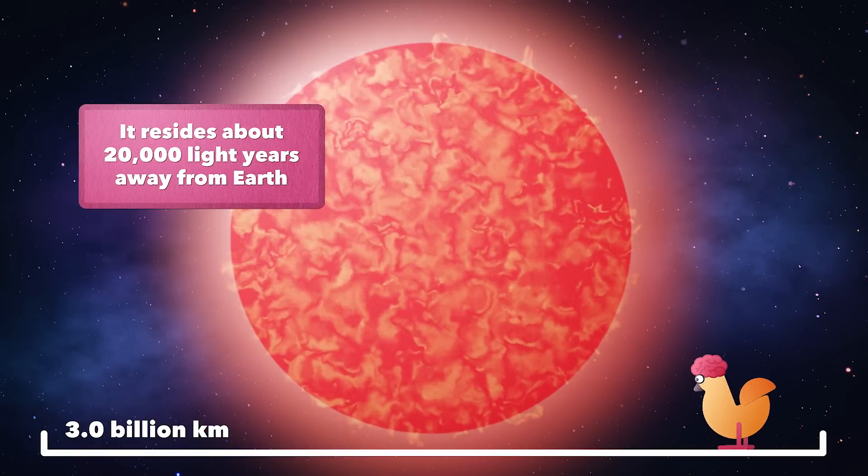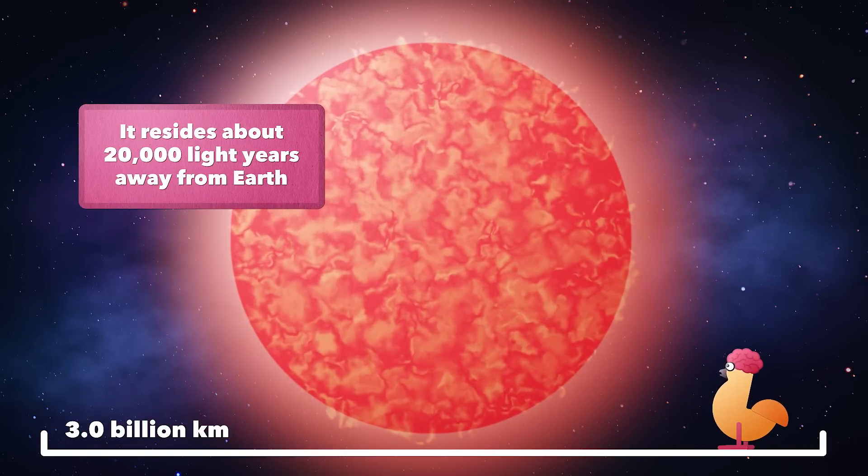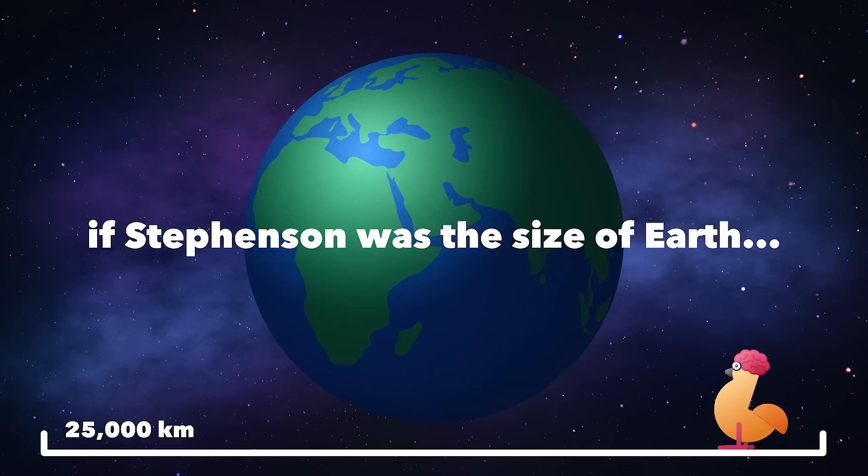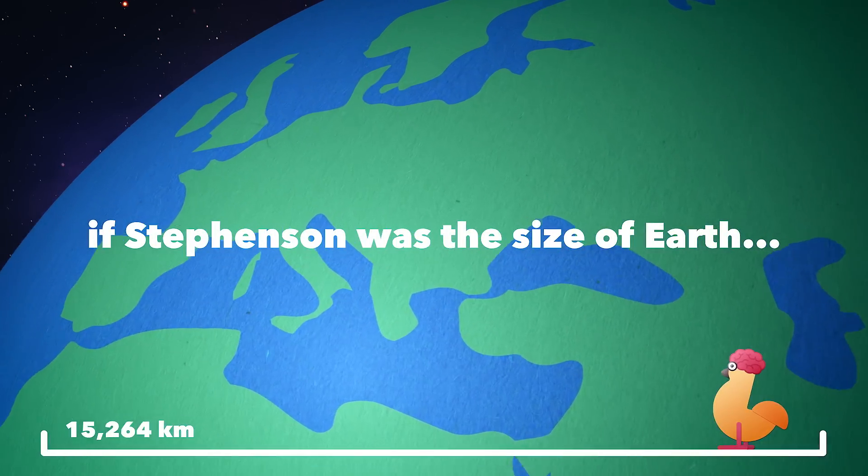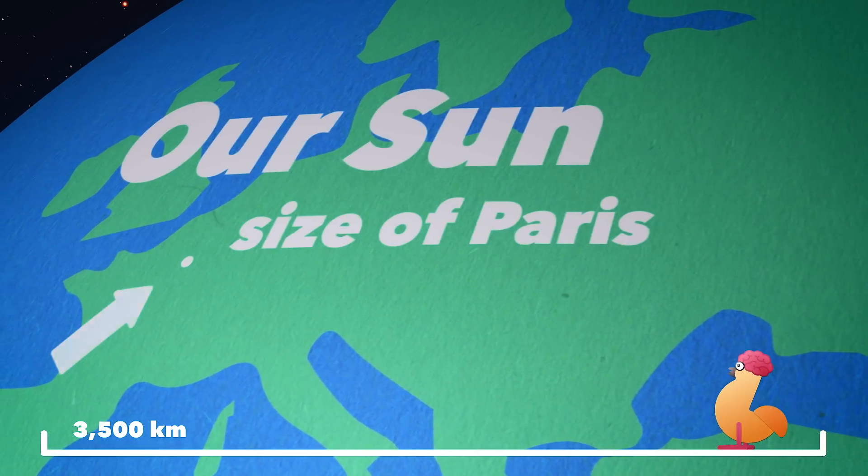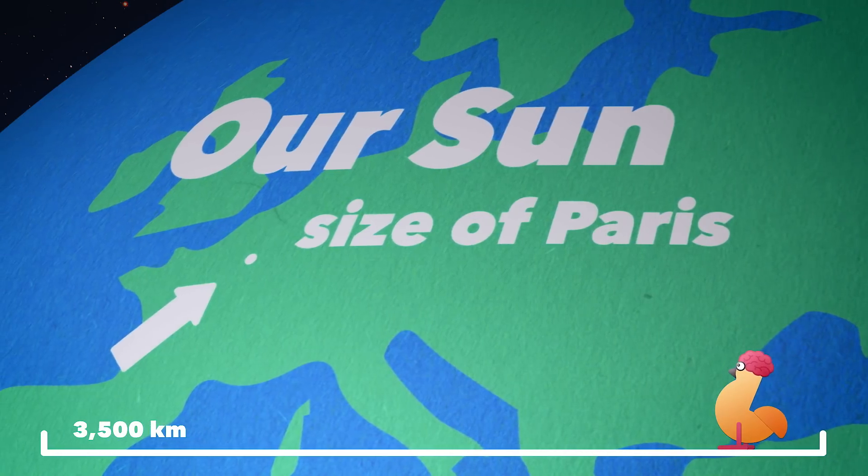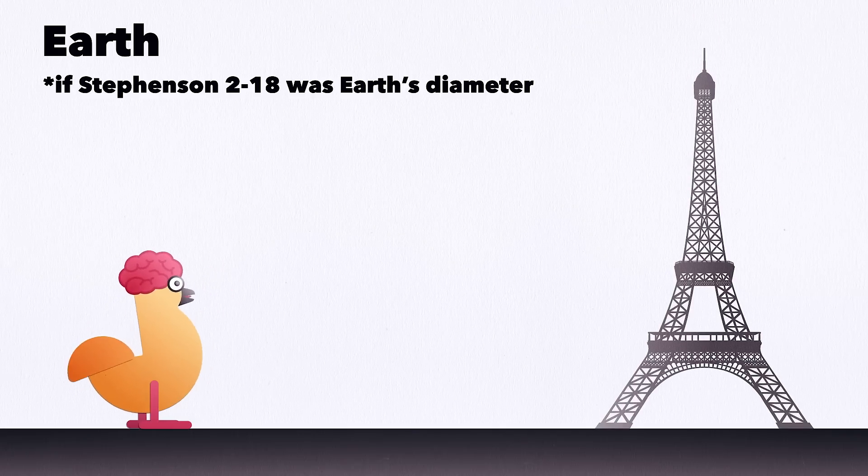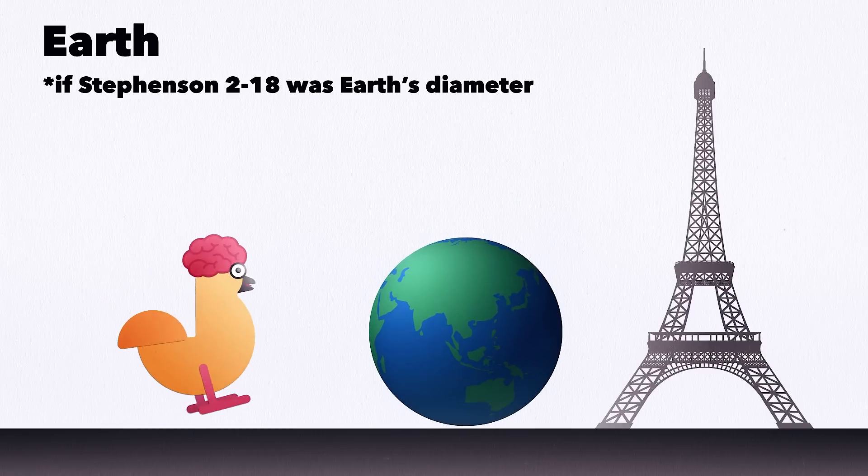Now, I get it. These sizes are hard to get your head around. So let's say Stephenson is the size of Earth for just a second. That would put our sun at about the size of Paris. And that would put Earth at about half the size of the Eiffel Tower.